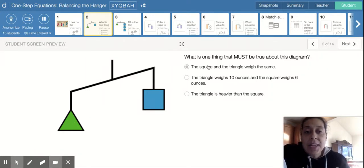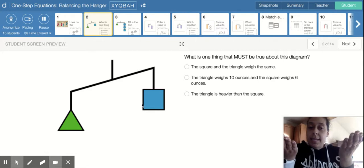So it says, what is one thing that must be true about this diagram? So the first one says the square and the triangle weigh the same. So we can see clearly that these two do not weigh the same. If they did, they'd be balanced equally.